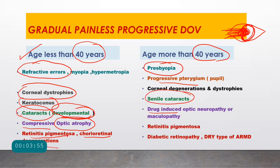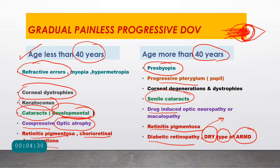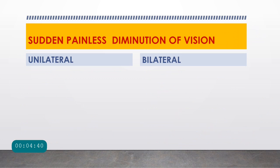In ages more than 40 years, retinitis pigmentosa can still occur. Diabetic retinopathy patients can develop macular edema gradually and progress through stages. In ARMD (age-related macular degeneration), the dry type — associated with drusen — presents with gradual painless progressive loss of vision. Once it progresses to wet ARMD with choroidal neovascularization membrane, the vision loss becomes sudden.